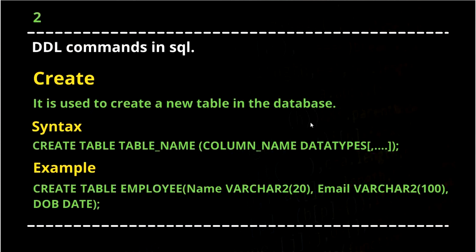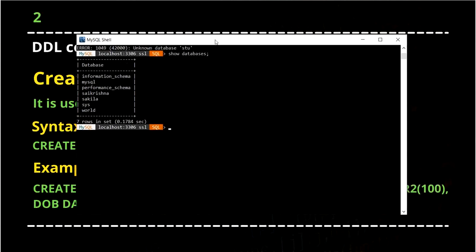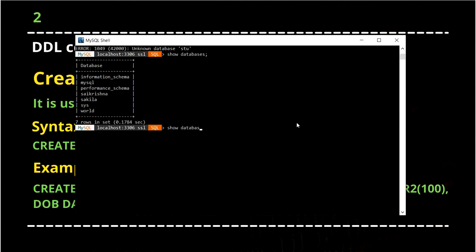Now we have to discuss DDL commands in SQL. DDL commands are mainly used to manipulate the database. The first one is CREATE, second is DROP, third is TRUNCATE, and fourth is ALTER. CREATE is used to create a new table in the database. The syntax is: CREATE TABLE table_name (column_name data_type). For example: CREATE TABLE employee (name VARCHAR(100), dob DATE). Let us try this in practice — we will show databases first.